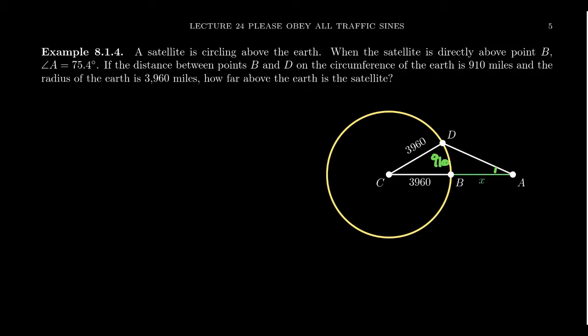Let's say that the satellite is directly above point B right here. Let's say that the angle that the satellite forms between these two cities, B and D, is 75.4 degrees.